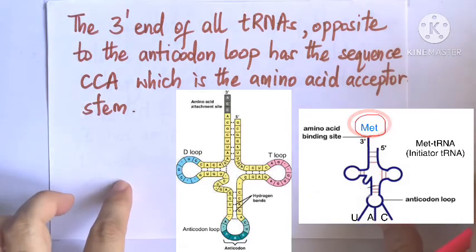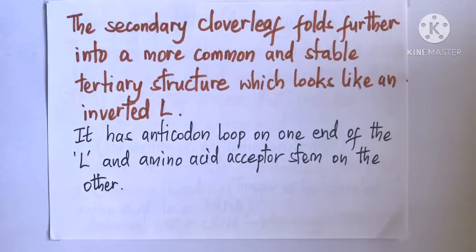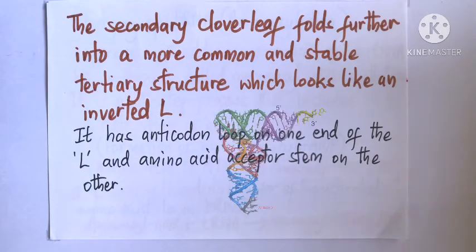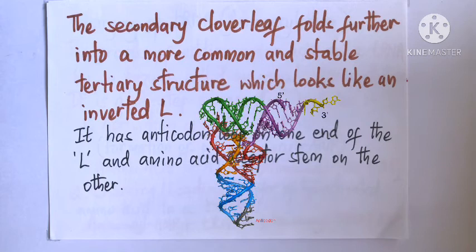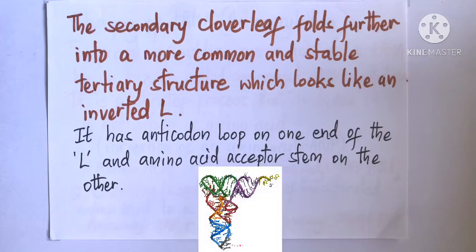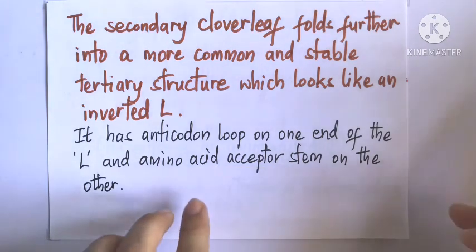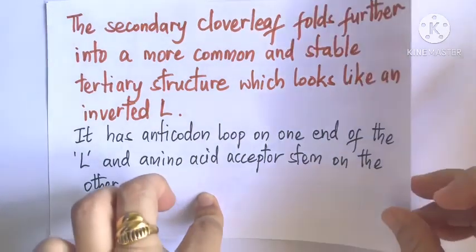The secondary cloverleaf tRNA structure can further fold into a more stable tertiary structure, which appears like an inverted L. It also has an anticodon loop on one end of the L and an amino acid acceptor stem on the other end. tRNA commonly exists in this tertiary form.